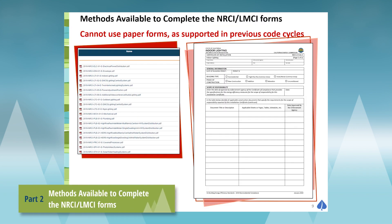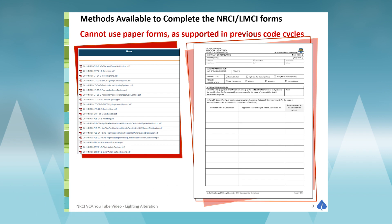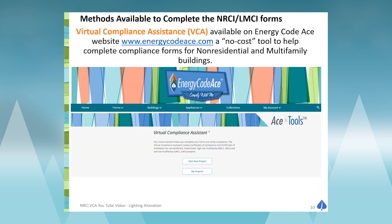In previous code cycles, we were able to use paper forms to document the Certificate of Installation Form. These are no longer a viable means of documenting the installation certificate and cannot be used for the 2022 code cycle. The tool you're going to use for your Certificate of Installation Forms — and also for Certificate of Compliance Forms for non-residential or multi-family buildings using the prescriptive approach — is the Virtual Compliance Assistant.